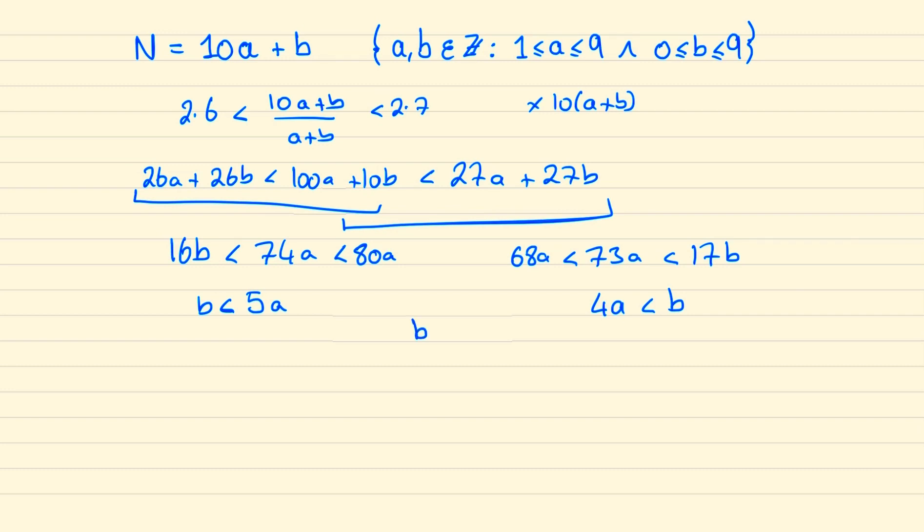And so we know b is a digit between 4a and 5a. Clearly a can't equal 1 since that says b is an integer between 4 and 5 and when a is 2, b would be an integer between 8 and 10 so b must be 9.